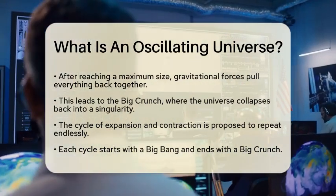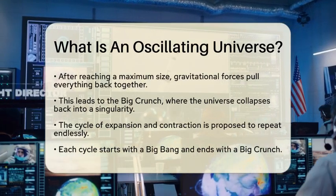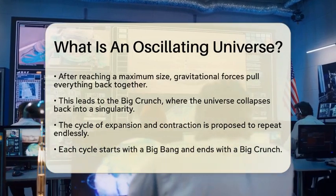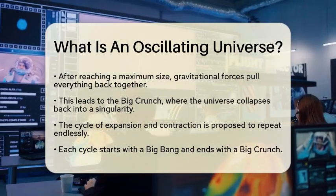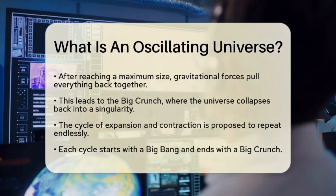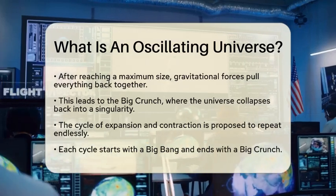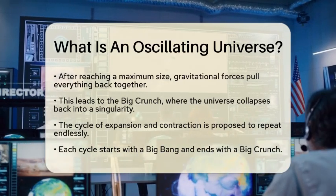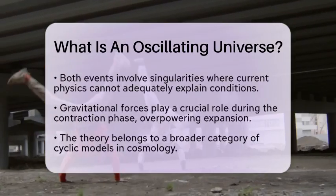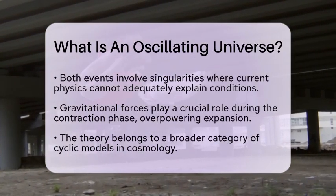The oscillating universe theory suggests that this cycle of expansion and contraction is not just a one-off event. Instead, it proposes that the universe could have gone through countless cycles before the one we are currently experiencing. Each cycle begins with a Big Bang and ends with a Big Crunch, creating an endless loop of cosmic rebirth.